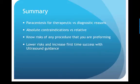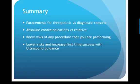In summary: paracentesis can be done for therapeutic reasons (to alleviate discomfort) or diagnostic reasons (to determine the cause of ascites). The absolute contraindication is acute surgical abdomen. Relative contraindications include coagulopathies, thrombocytopenia, distended bladder, pregnancy, distended bowel, and cellulitis. Procedure risks include infection, bleeding, and bowel or intra-abdominal perforation, which can be avoided using ultrasound. Ultrasound increases first-time success of paracentesis and lowers risk for the patient.